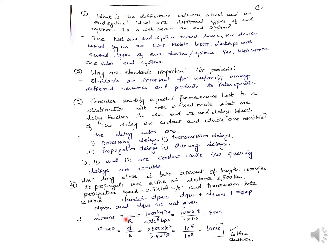The formula for transmission delay is L/R, where L is the packet length and R is the link rate. So it's 1000 bytes divided by 2 Mbps. Since the units differ — bits per second vs. bytes — we convert: 1 byte = 8 bits, so 1000 × 8 = 8000 bits divided by 2 × 10⁶ = 4 milliseconds. For propagation delay: distance divided by speed = 2500 km divided by 2.5 × 10⁸ = 10 milliseconds.